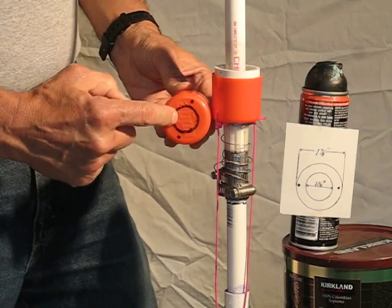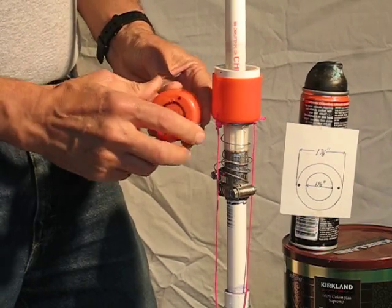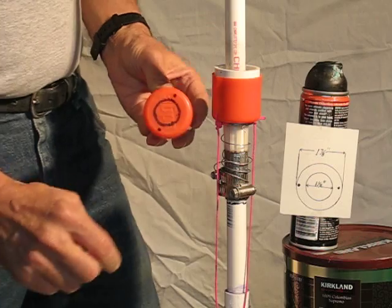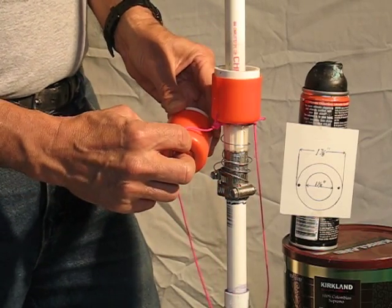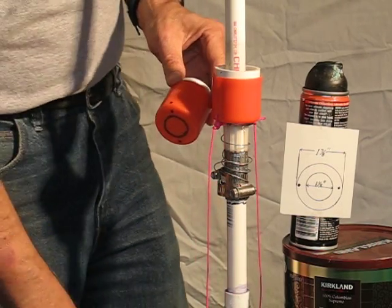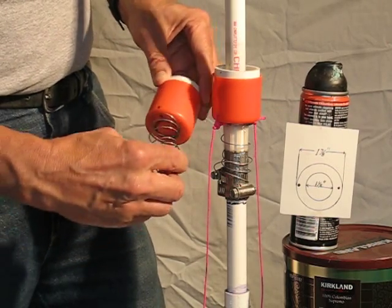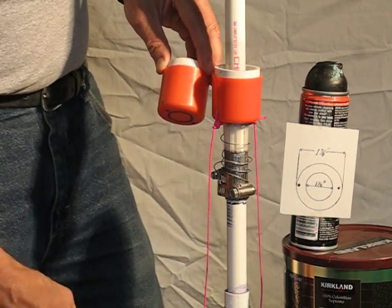Now you take and cut a 1 1⁄8 inch diameter hole in the cap. Drill four small holes so you can tie your cords onto it. Now your spring has something to seat up against and hold that locking collar in place.